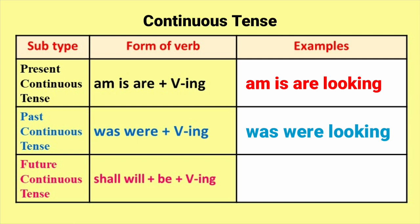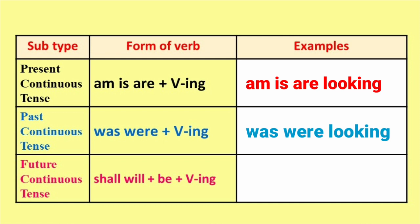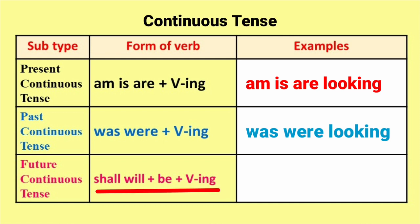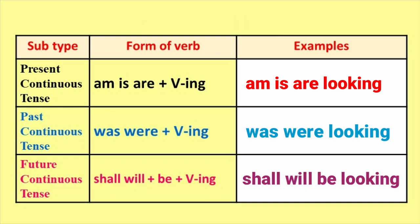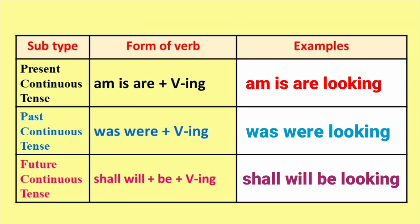Future Continuous Tense मधे Shall / Will + Be + V-ING म्हणजेच Present Participle. For example: Shall / Will + Be + Looking.